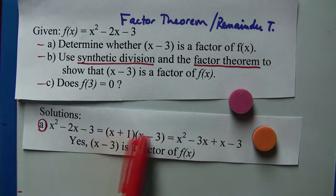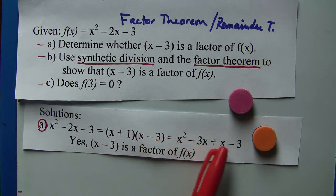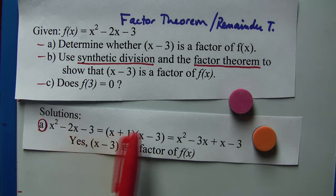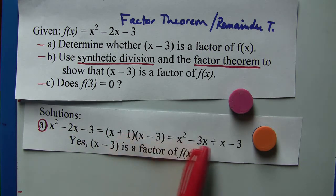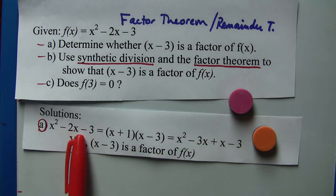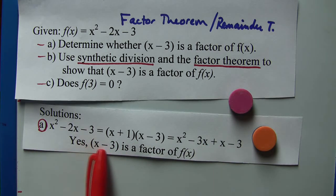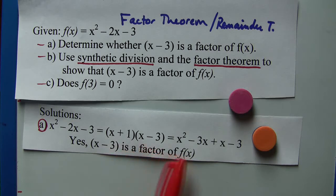Now if you're not sure of your factoring, you can always FOIL it to get back to the original equation: x squared, the outer is -3x, the inner is x, and the last is -3. We combine these two terms, we get -2x. So yes, (x - 3) is a factor of f(x).